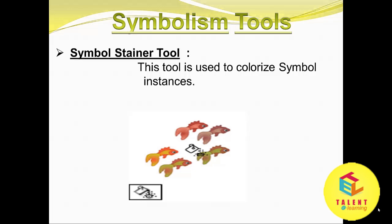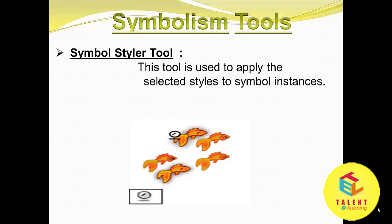Symbol Stainer tool: this tool is used to colorize symbol instances. This is the icon for the Symbol Stainer tool. The object color is changed to another color — we can apply a new color to the object using this tool.